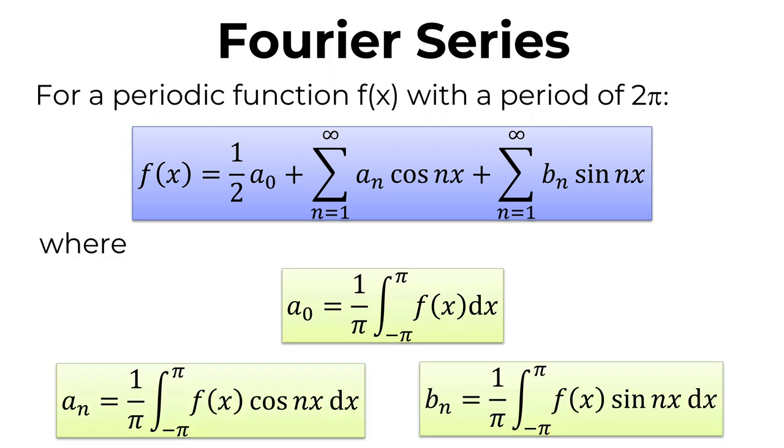An and bn are Fourier coefficients, and these can be evaluated using an integral of fx multiplied by cosine nx or sine nx over 1 period divided by pi.